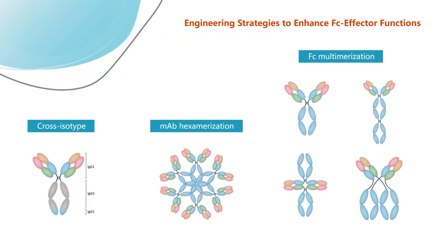A mutation of lysine at position 326 to tryptophan will increase C1Q binding, resulting in enhancement of CDC. Although both IgG1 and IgG3 can effectively activate complement, IgG3 antibodies can bind C1Q more effectively. Therefore, cross-isotype antibodies have been generated by replacing the CH2 and CH3 domains of an IgG1 antibody with the corresponding regions of an IgG3 antibody, which increases the CDC response. High-resolution crystallography studies have revealed that specific non-covalent interactions between IgG-FC domains induce altered hexamer formation on the cell surface, providing a docking platform for the six-globular-headed C1Q molecule, thereby efficiently activating the complement pathway. Introducing the specific point mutations E345R and E430G at the FC and CH2-CH3 interface can stimulate FC-FC interactions and facilitate antibody hexamerization, leading to superior C1Q binding and enhanced CDC.